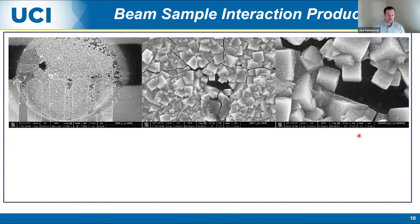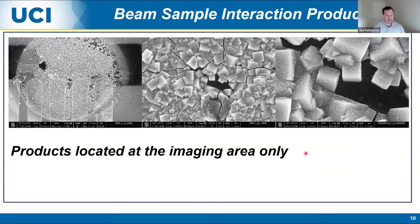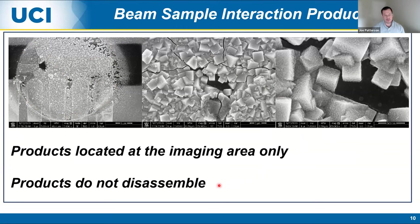In the high-dose control experiment, the beam products we formed are these interesting cube-like structures. I don't know what they are, but it's worth investigating - there's a lot of interesting work using the electron beam to do chemistry. But what distinguishes them as beam products: once formed, they don't go anywhere, which is very different from the active material I'll show next. Also, post-mortem SEM clearly shows these products formed only in the area where we imaged - not anywhere else - and they don't disassemble when we remove the electron beam.